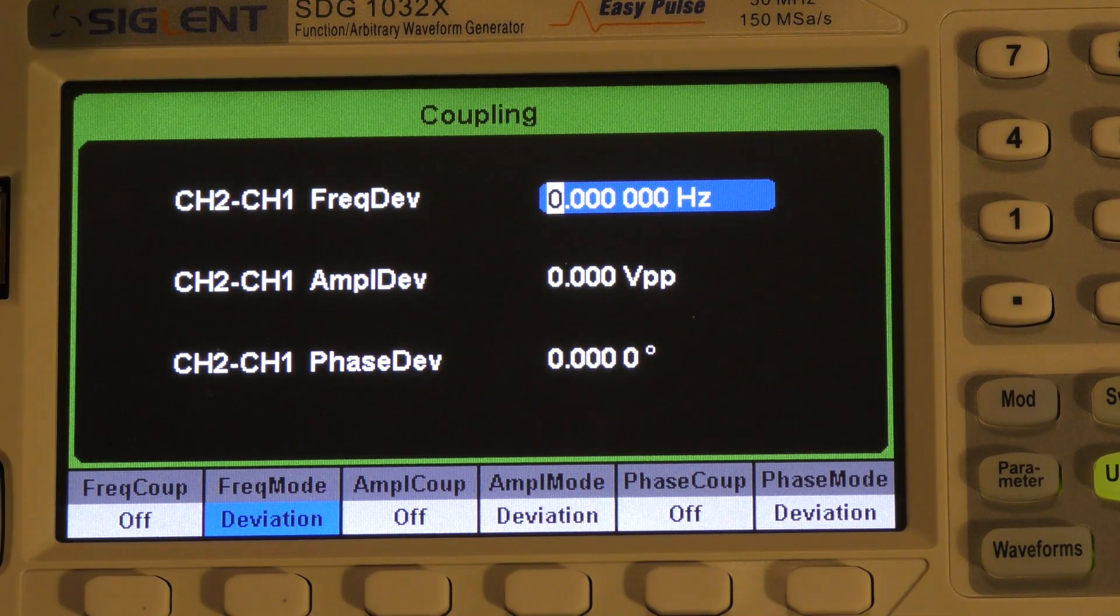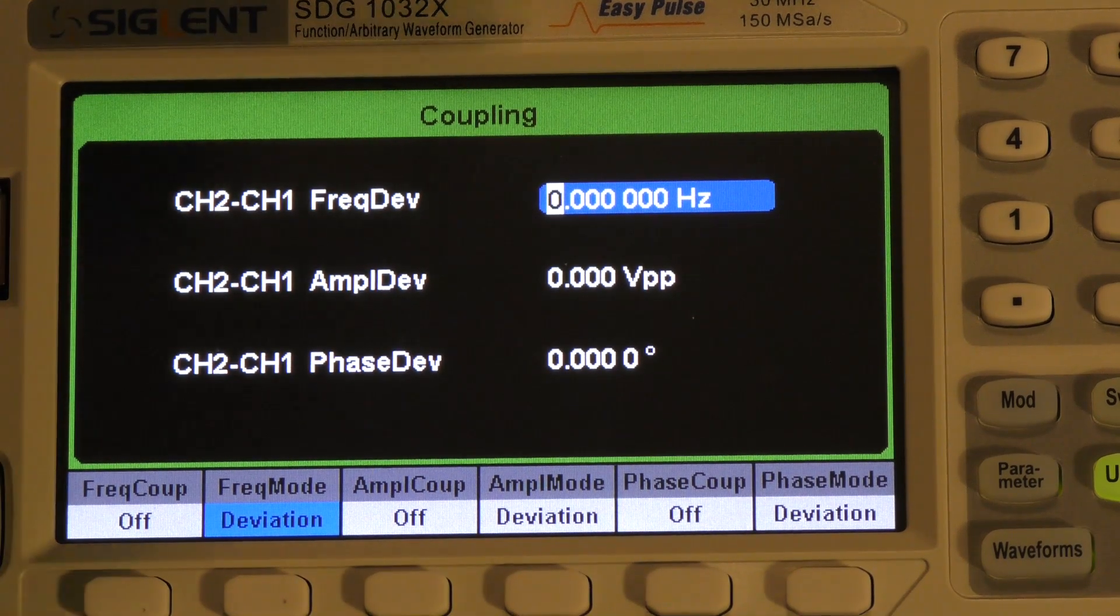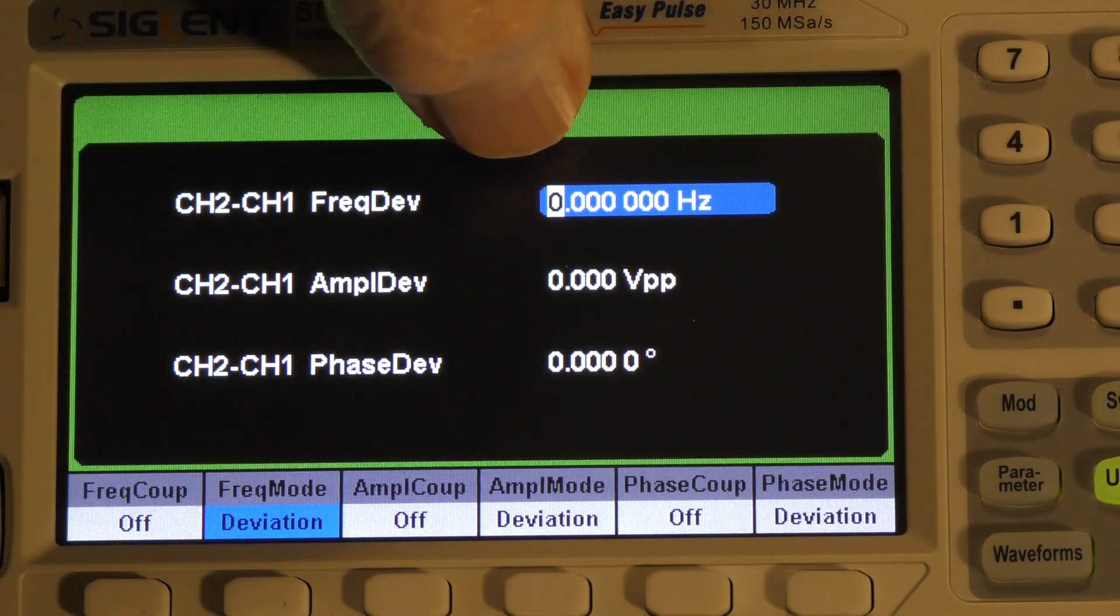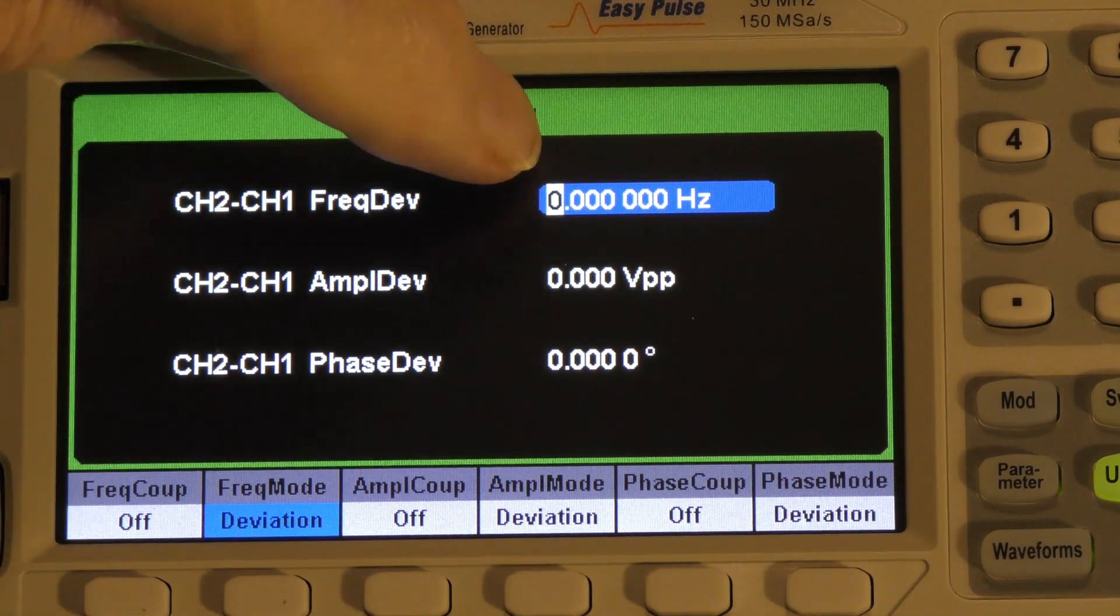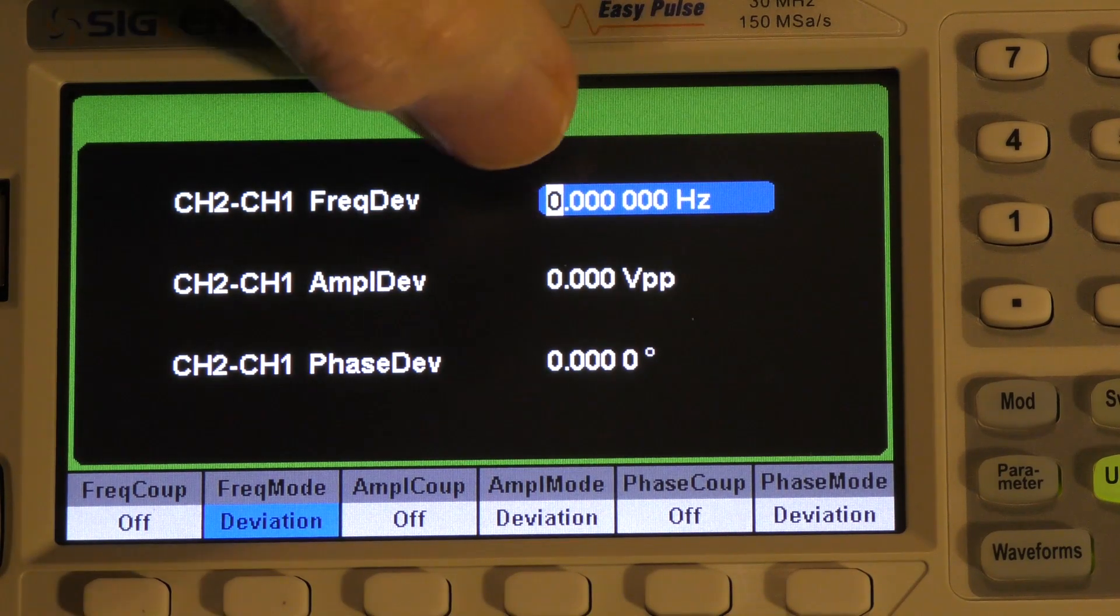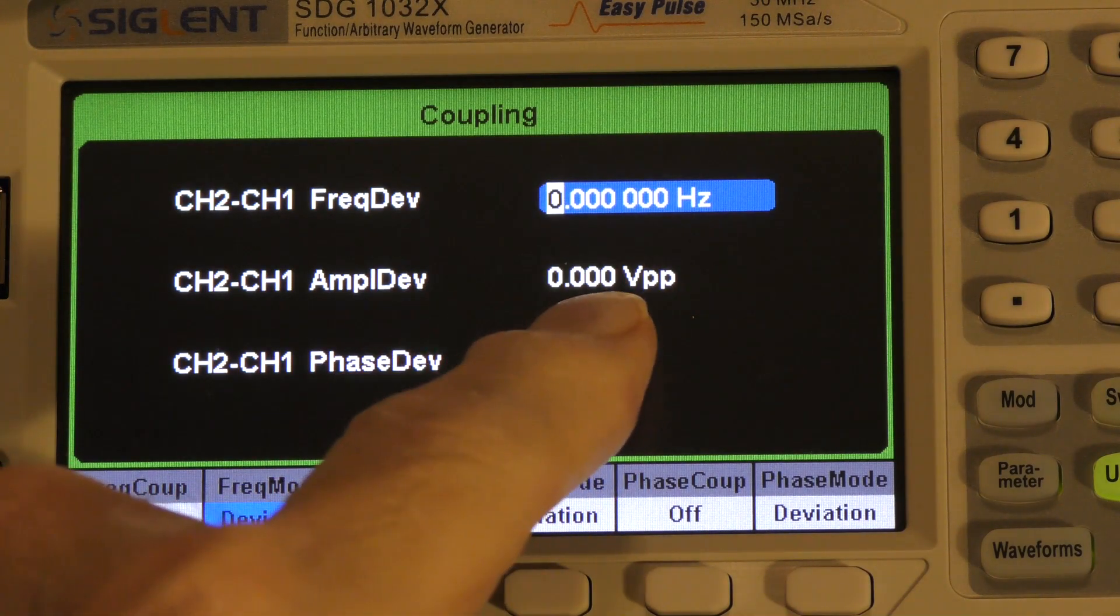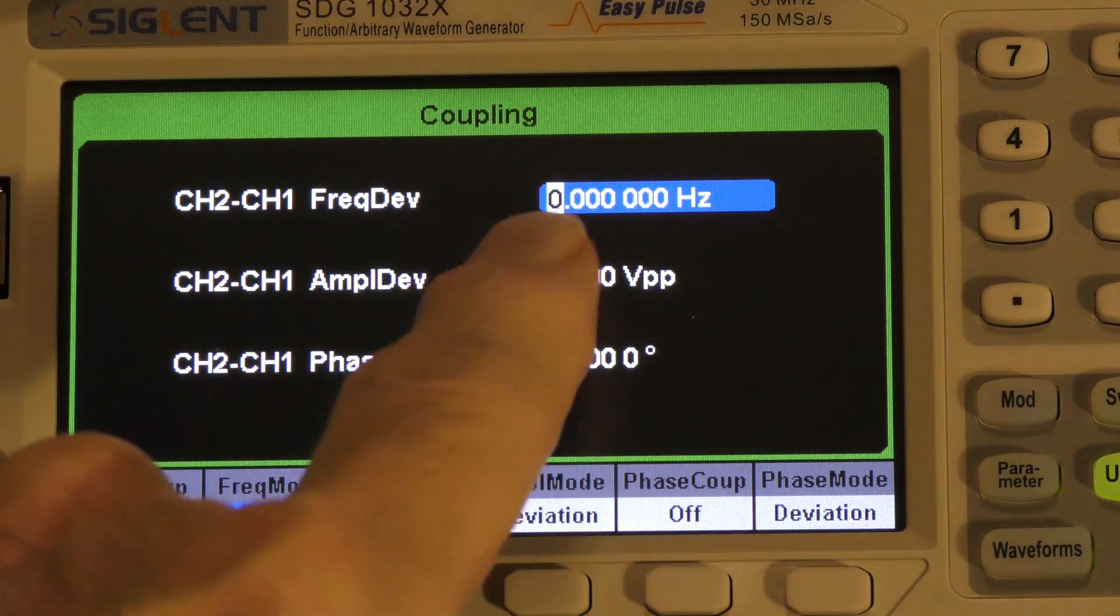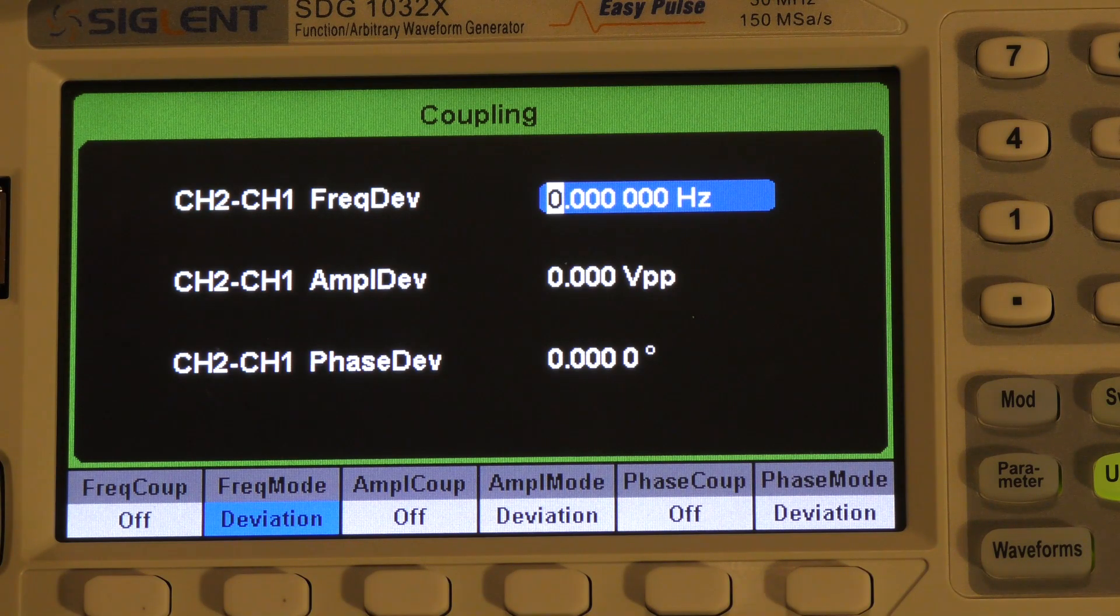And here's what's interesting. Unlike the other two generators, in the Siglent, you can actually set this as a ratio or as a frequency offset. So, you can set this to be one, or to be zero, in which case they track, frequencies track. Similarly, you can set this to be zero, in which case the amplitudes track. But if you set this to, for example, 50 kHz, then the two frequencies will remain 50 kHz apart, even as you change one over the other.